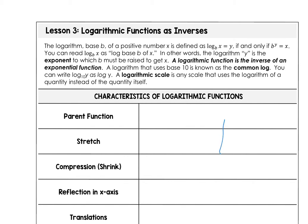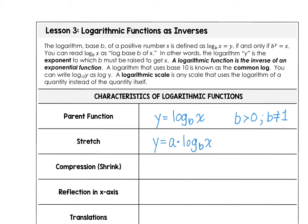We want to talk about the graphs of these functions, starting with the parent function: y equals log base b of x, provided b is greater than zero and not equal to one. We have a stretch factor when y equals a times log base b of x, if the absolute value of a is larger than one. Using that same model equation, a times log base b of x is a compression or shrink factor if that value is between zero and one.